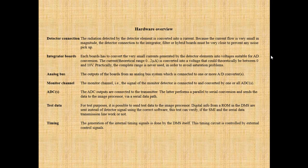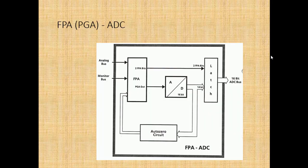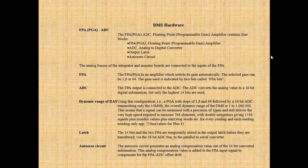Timing: the generation of internal timing signals is done by the DMS itself, controlled by external control signals. DMS hardware — FPA/PGA/ADC: the FPA (floating point amplifier) / PGA (programmable gain amplifier) / ADC (analog-to-digital converter) module contains 4 blocks: FPA/PGA, ADC, output latch, and AutoZero circuit. The analog buses of the integrator and monitor boards are connected to the inputs of the FPA.